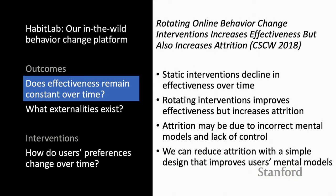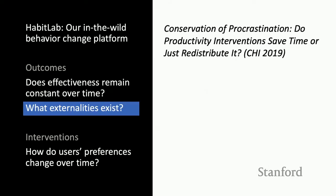To summarize the CSCW 2018 paper: static interventions decline in effectiveness over time; rotating interventions improves effectiveness but at the cost of increased attrition; attrition is likely due to incorrect mental models and a lack of control; and we can reduce attrition with a simple design that improves users' mental models.